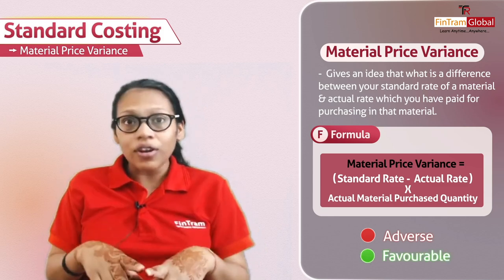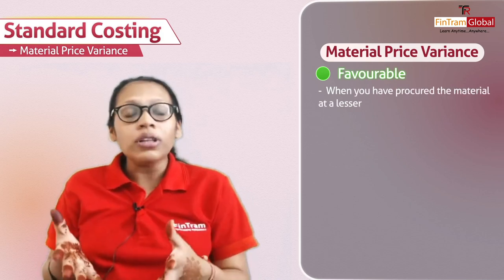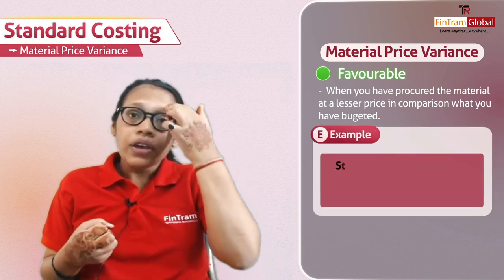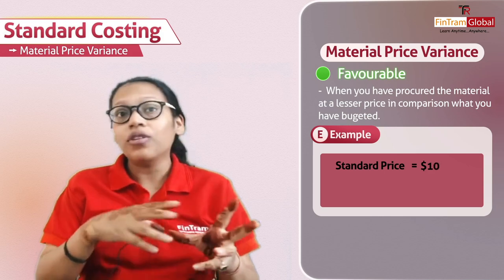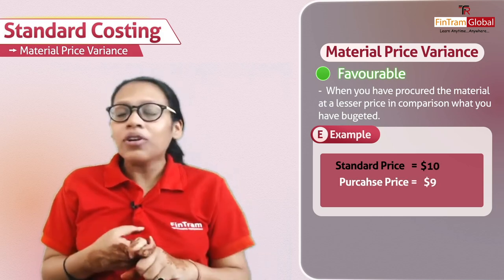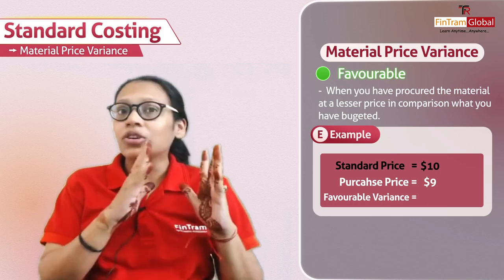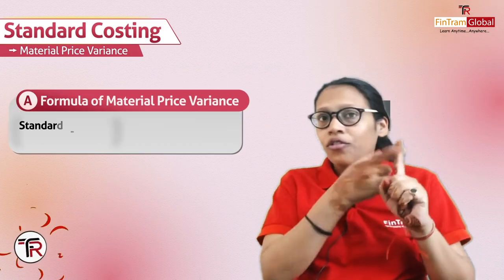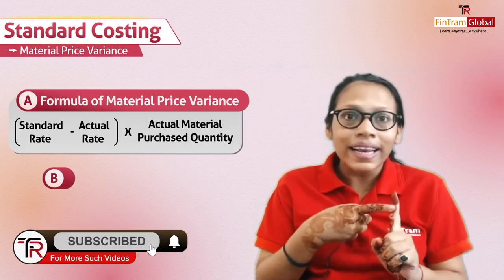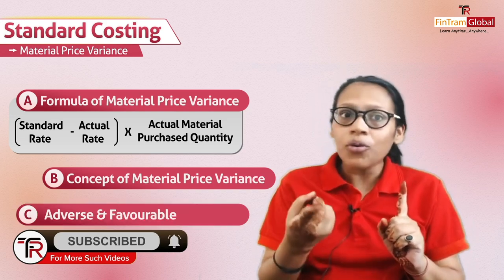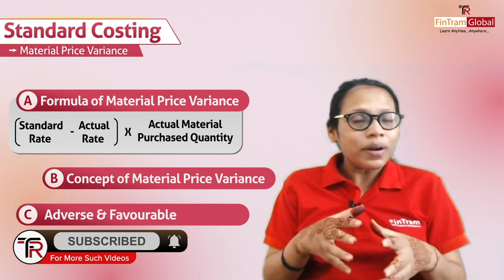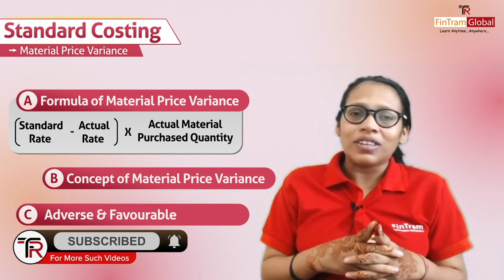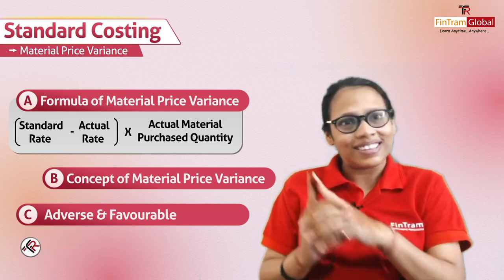The variance will be favorable when you have procured the material at a lesser price compared to what you budgeted. For example, if your standard price was ten dollars and you procured at nine dollars, it comes out favorable — meaning your performance is good. So we have revised the concept, formula, and both adverse and favorable scenarios of material price variance. This is Siedisha Maheshwari signing off.